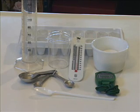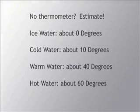Now you're going to need the following materials: an ice cube tray, water, a graduated cylinder, a small clear container, a thermometer, sugar, a half teaspoon measuring spoon, a wooden or plastic spoon for stirring, and a stopwatch. Now if you do not have a thermometer, just estimate temperatures.